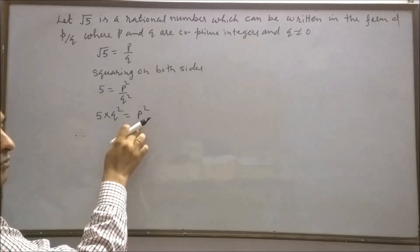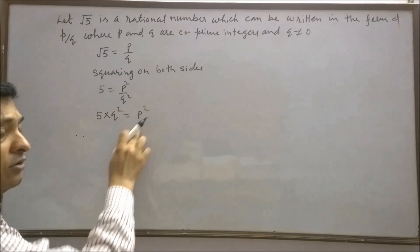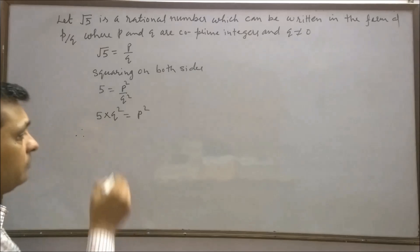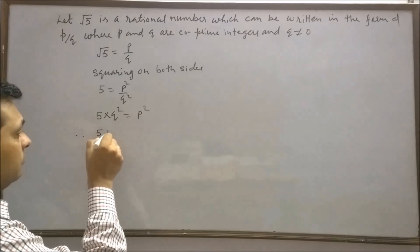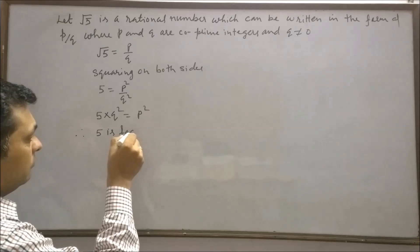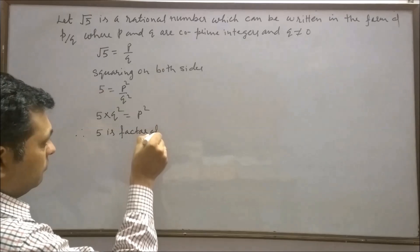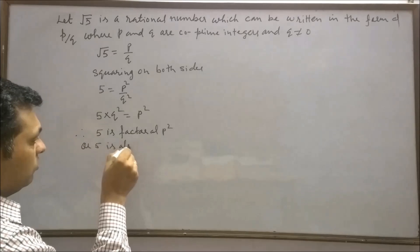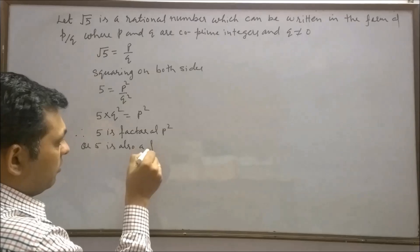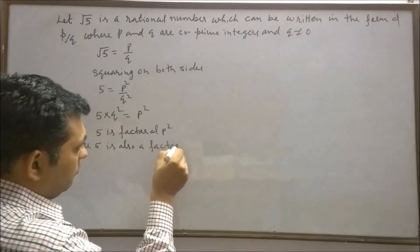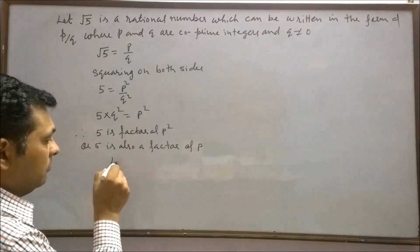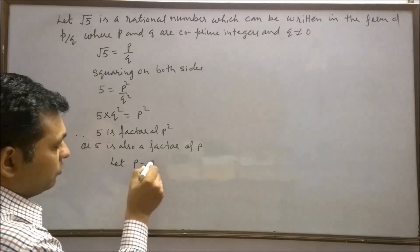Therefore 5 is a factor of p square. If 5 is a factor of p square, it means 5 is also a factor of p. Let p is equal to 5x.